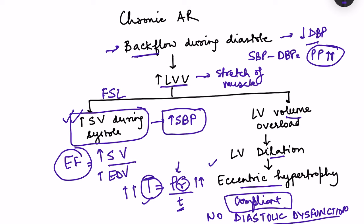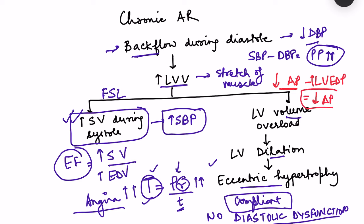Due to eccentric hypertrophy and increased wall tension, episodes of angina can develop. Coronary blood flow to the left ventricle occurs mainly during diastole, driven by the pressure gradient: aortic pressure minus left ventricular end diastolic pressure. In AR, aortic pressure falls during diastole while LVEDP rises slightly, markedly reducing the coronary perfusion pressure gradient and decreasing diastolic flow — leading to angina.